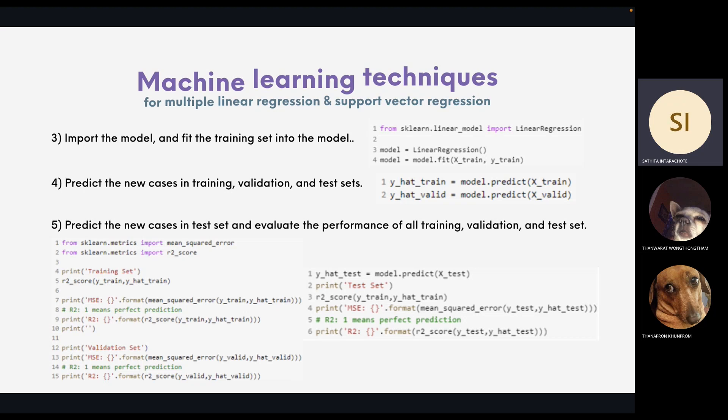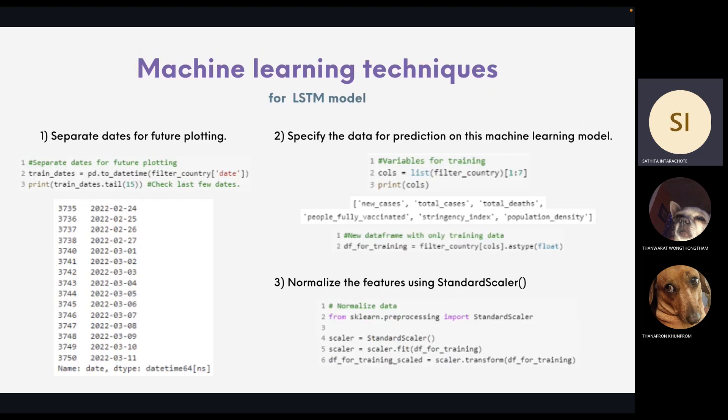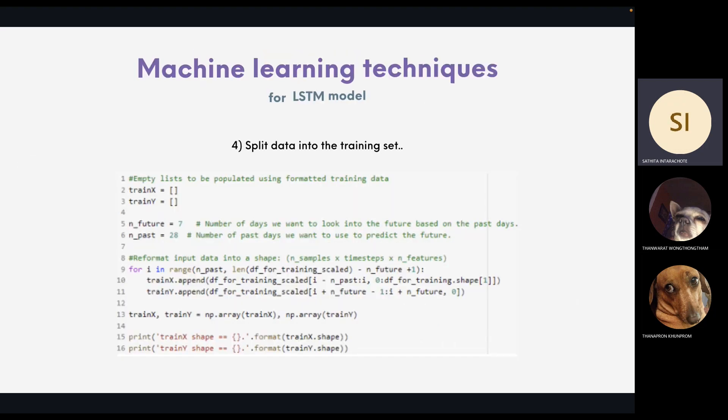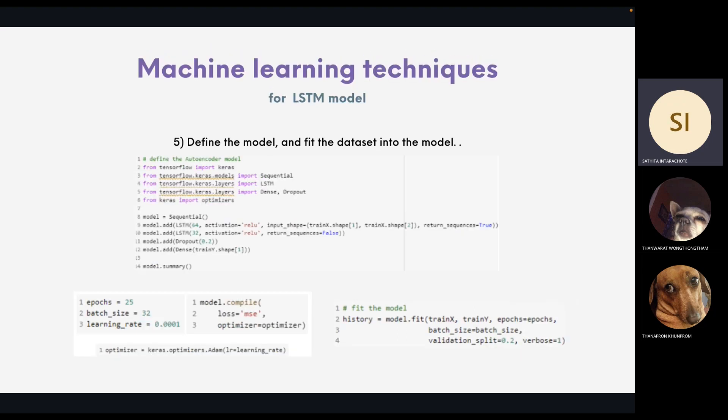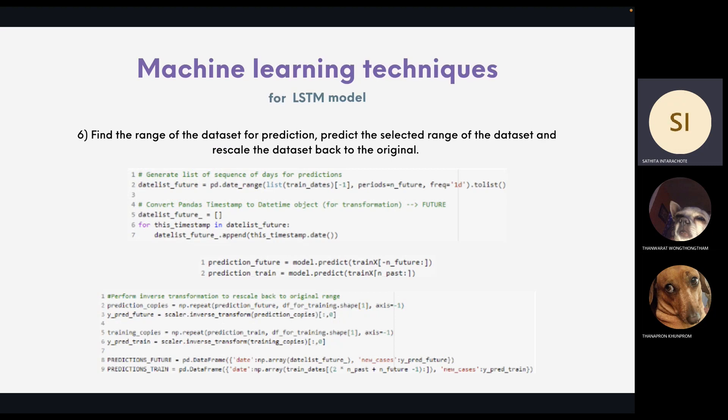And for long short-term memory model, it has written different processes. Separate this for future plotting and specify the data for prediction on this machine learning model. And the data that is extracted from filter country will have no data. And normalize the features using standard scaler, and split data into the training set. Define the model and fit the dataset into the model, and find the range of the dataset for prediction. Predict the selected range of the dataset, and then scale the dataset back to the original.